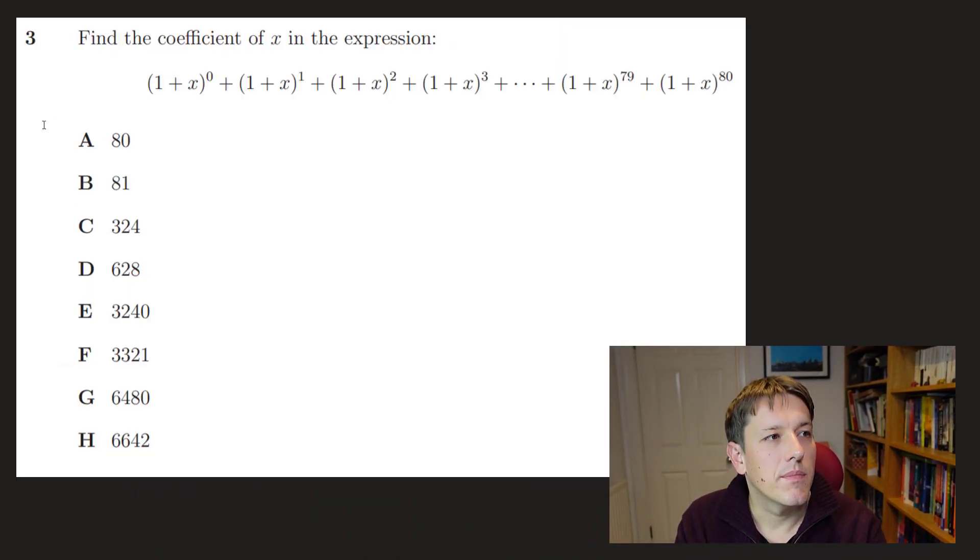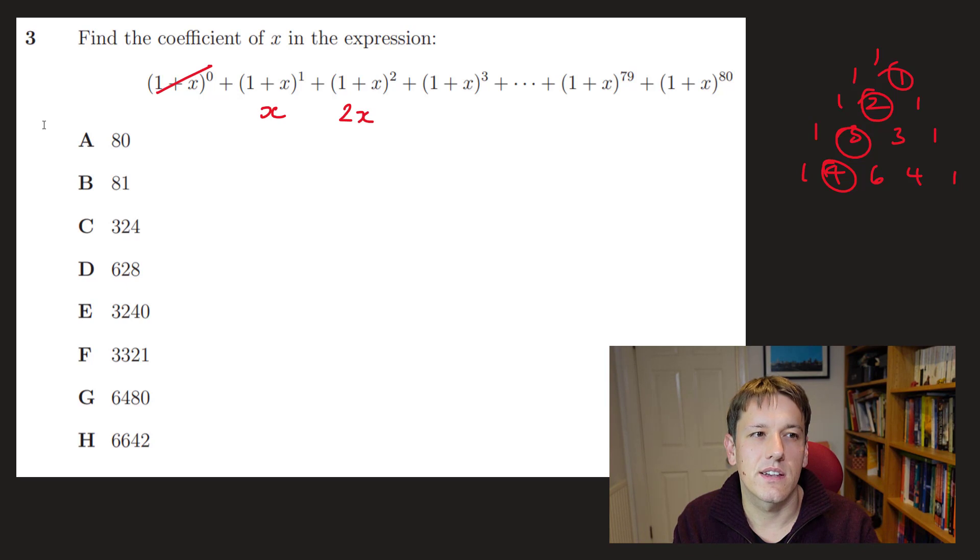OK, in number 3 here, it says find the coefficient of x in this expression. And if you think about the x term, well, in the first one, (1+x)⁰, that's just 1, so there's no x term in here. (1+x)¹ would just be x. Now, if you do binomial expansions, in general, we know (1+x)² is 1 + 2x + x². So we might start to guess the sequence here. But in general, when we do the binomial expansions, we're looking at, for the x term, we're looking at the coefficient in Pascal's triangle that's just going down here. So it's always going to be just the power times x here. So it's 3x for this one.